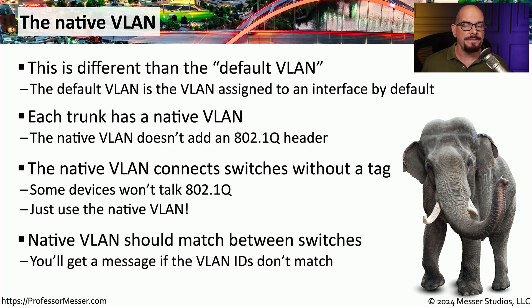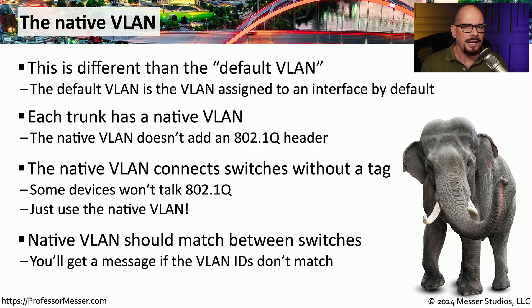If you're defining a native VLAN on one switch, you'll need to make sure that the native VLAN is identical on the other switch you're connecting to. Otherwise, you'll see error messages appear in the log of your switch.